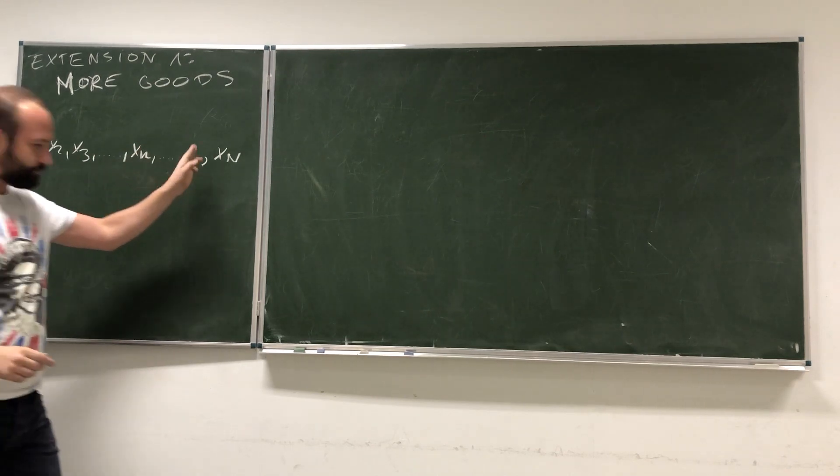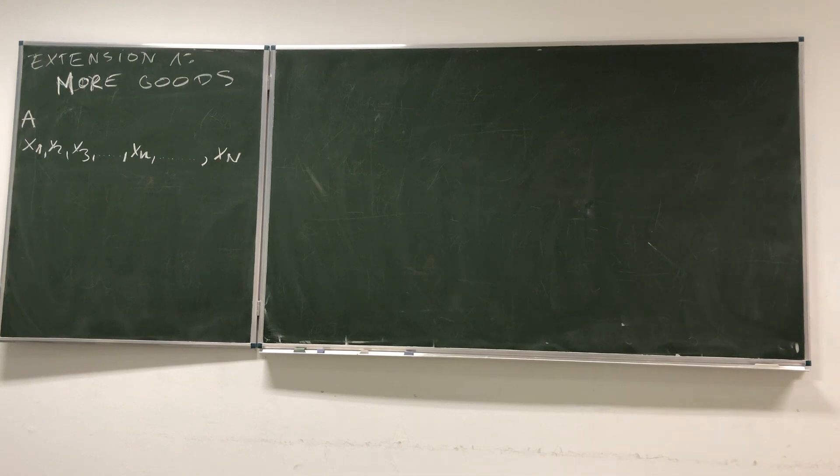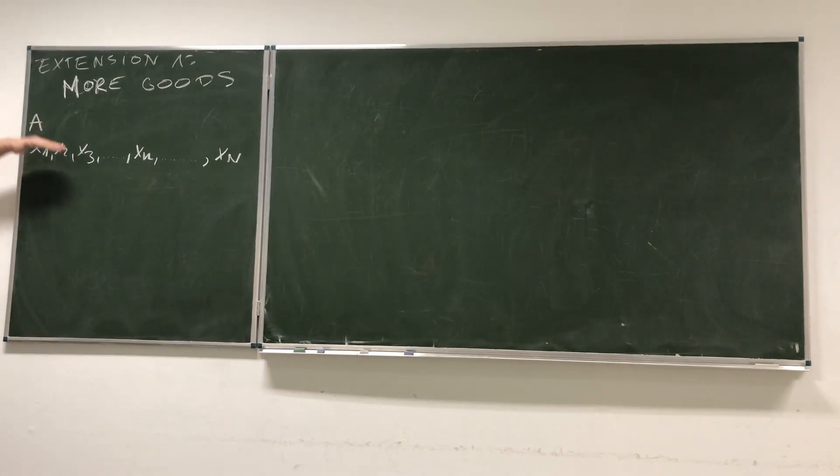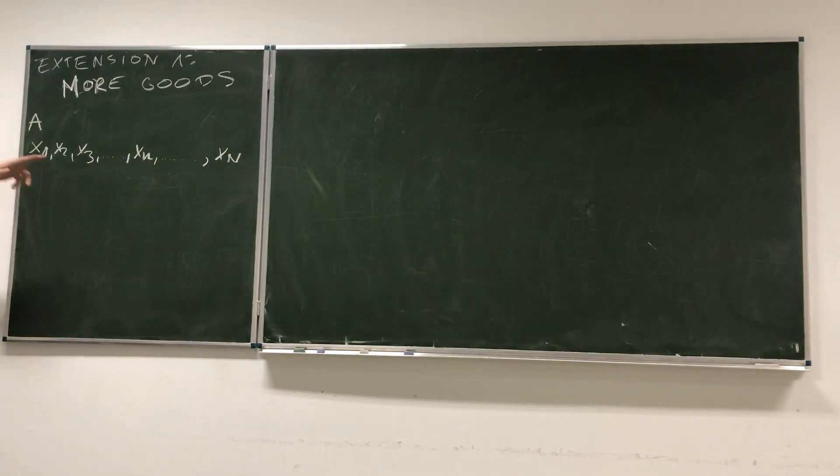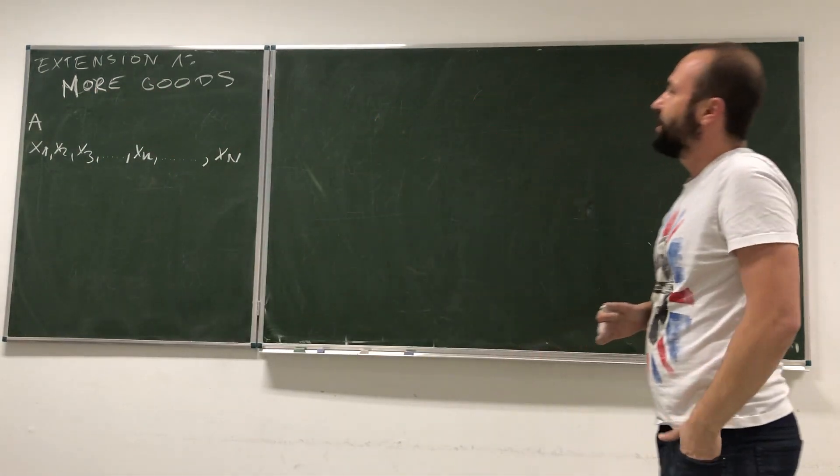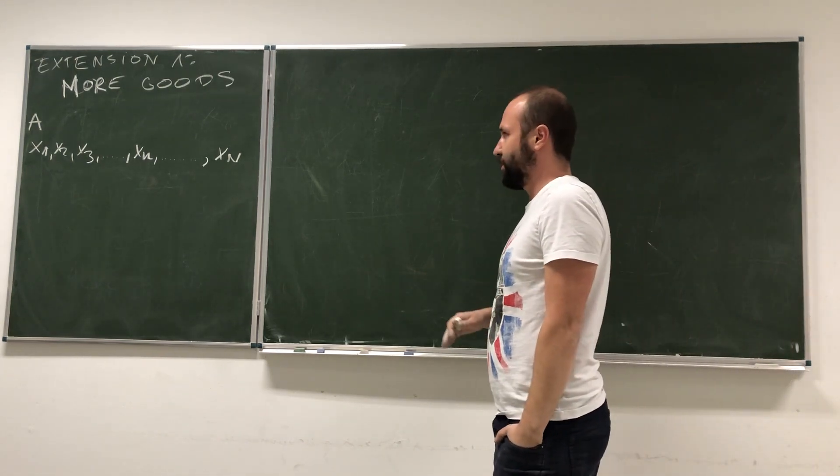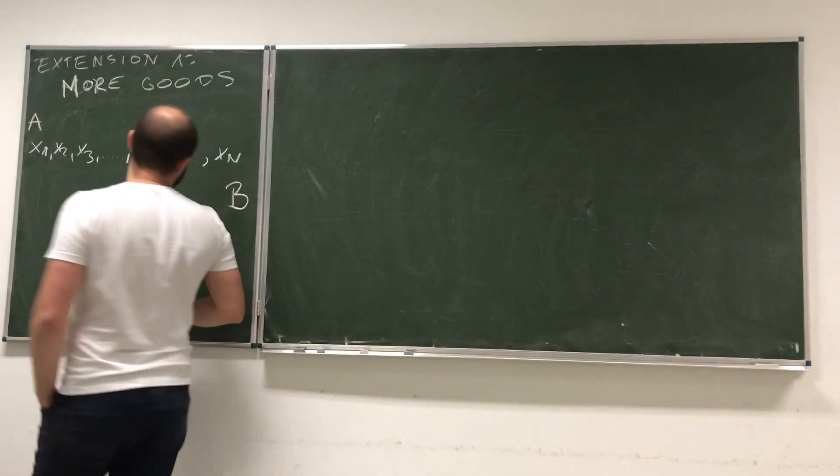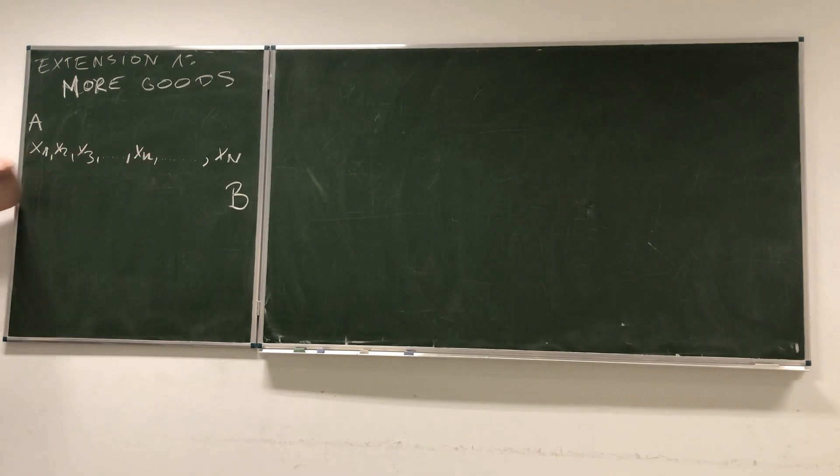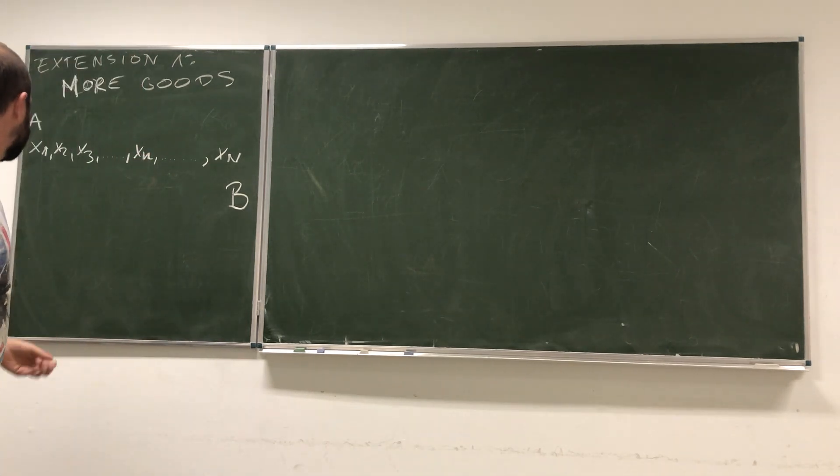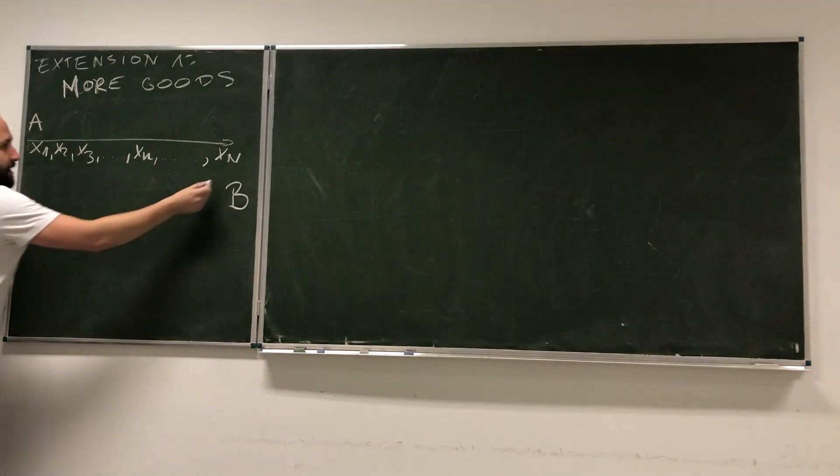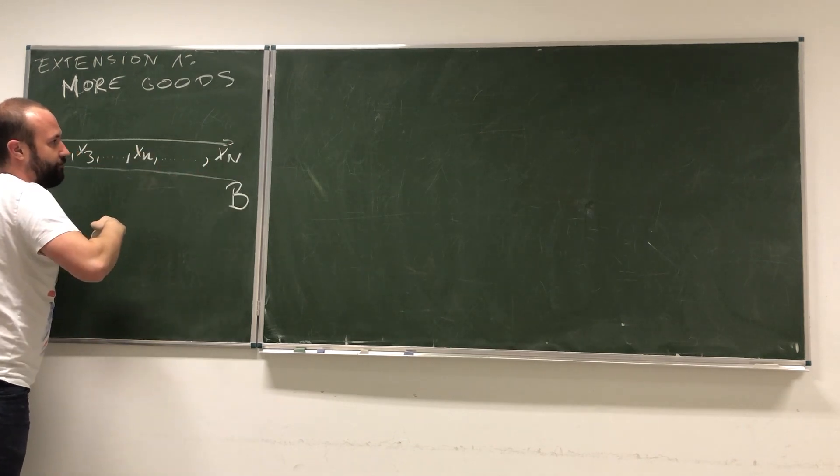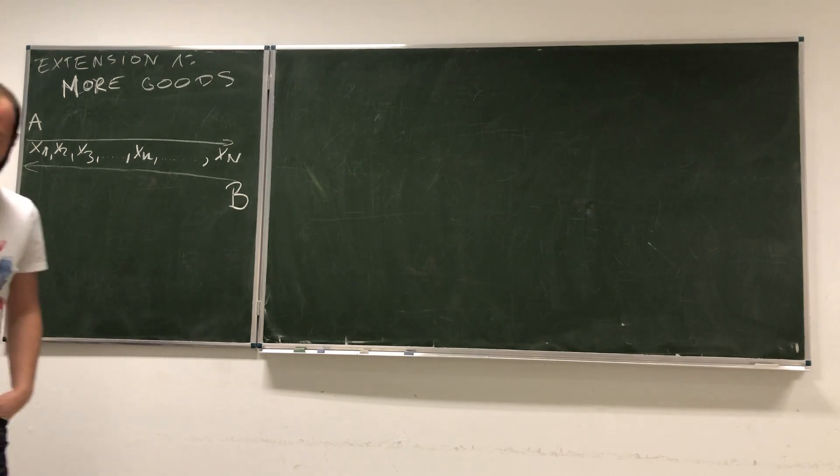Let's assume that those goods were ordered based on the comparative advantage of country A over country B. Here country A has the biggest comparative advantage, here is the second biggest, third, and so forth. Here is the good in which country A has the lowest comparative advantage. This means if I look from the perspective of country B, we would be going in the opposite direction. Here we have declining comparative advantage of A and declining comparative advantage of B.